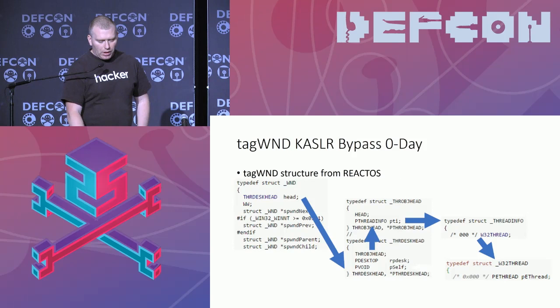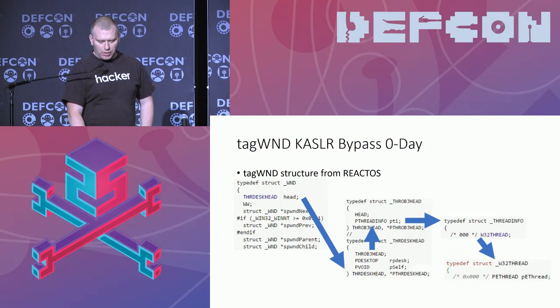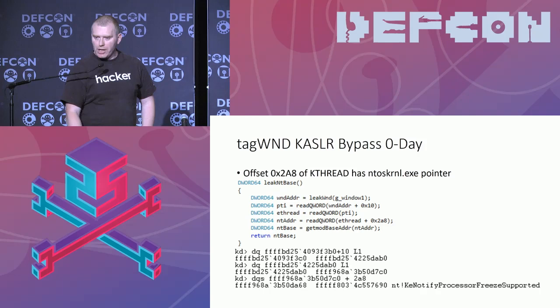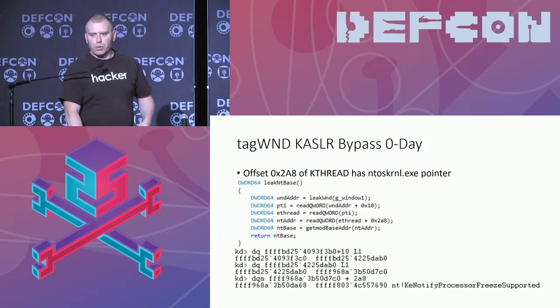Looking at the window primitive: it's also documented on ReactOS. The header structure for the window object is convoluted — it's a lot of structures nested in each other. But if we follow the chain, we find that a lot of different header structures end up pointing at the ETHREAD of the kernel process. And the ETHREAD is very interesting because it contains a pointer to the NT kernel. So again, we just use our read primitive and the location of the window object to read out the NT kernel pointer and then find the base address by looking for the PE header. In this way, we have a generic means to find the NT kernel pointer and NT base address, no matter which primitive we use.